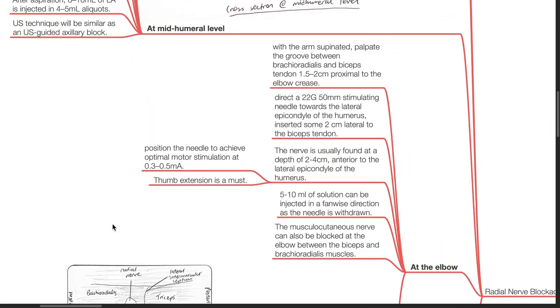At the level of the elbow, with the arm supinated, palpate the groove between the brachioradialis and biceps tendon, 1.5 to 2 cm proximal to the elbow crease. Direct a 22-gauge 50 mm stimulating needle towards the lateral epicondyle of the humerus, inserting about 2 cm lateral to the biceps tendon.